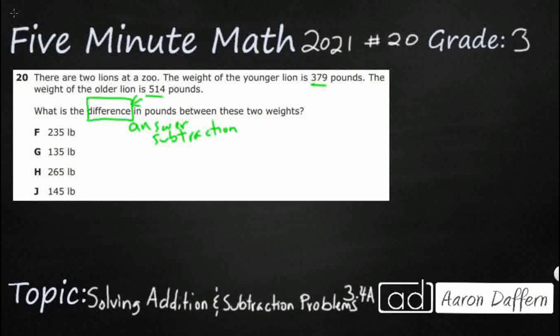If you multiply, the answer is called a product. If you divide, the answer is called a quotient. So difference is the only clue that we're going to need to subtract here.